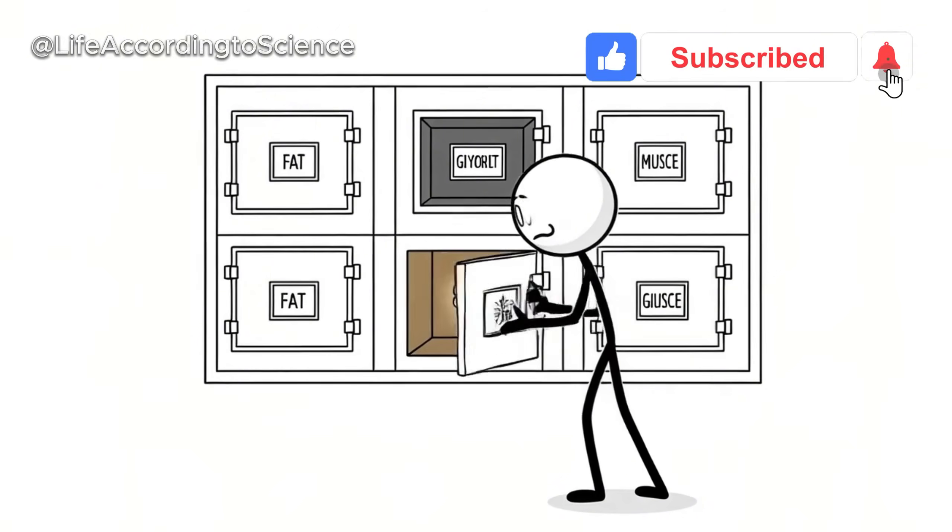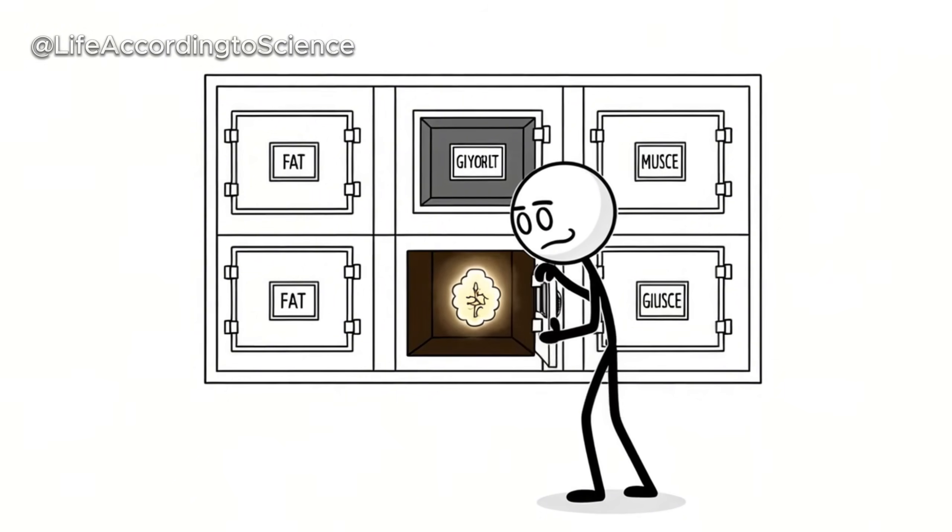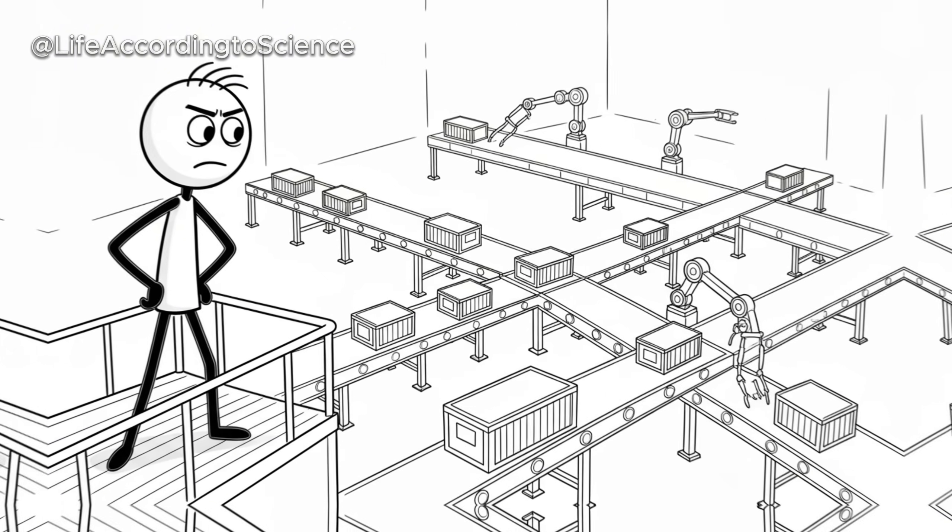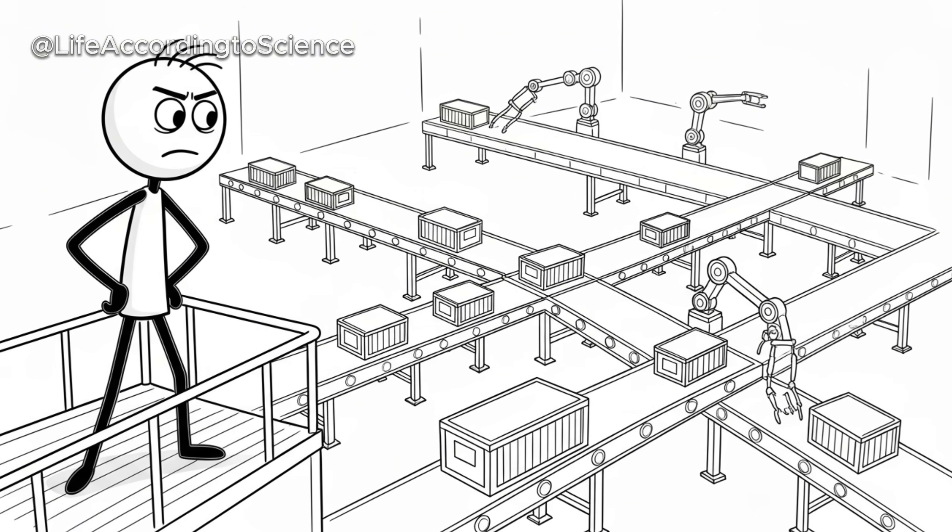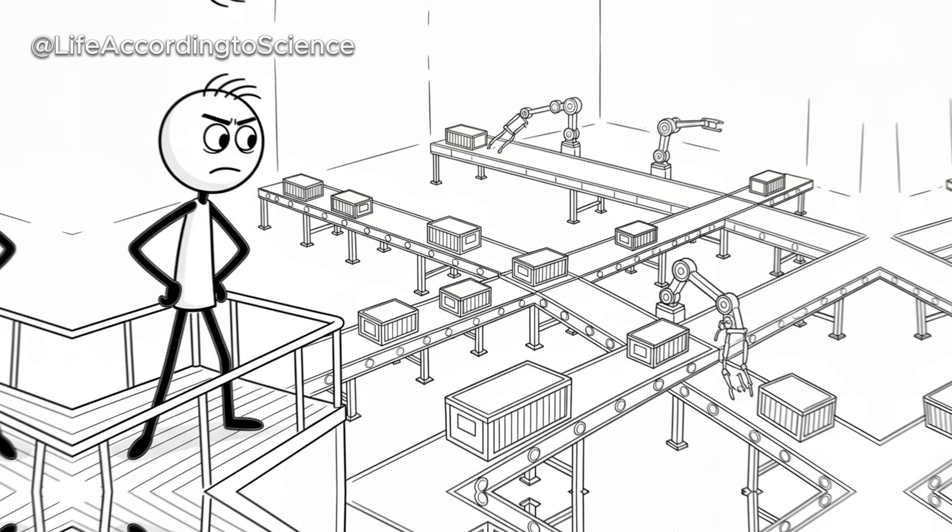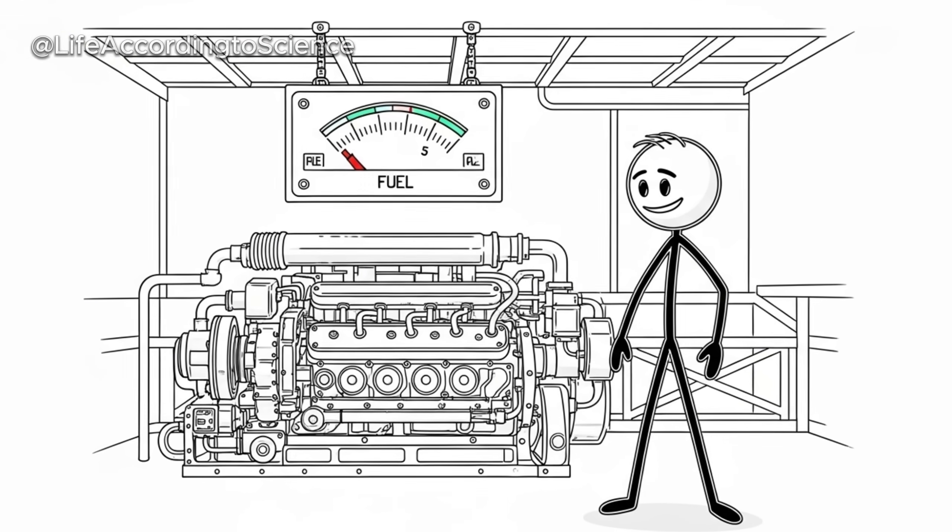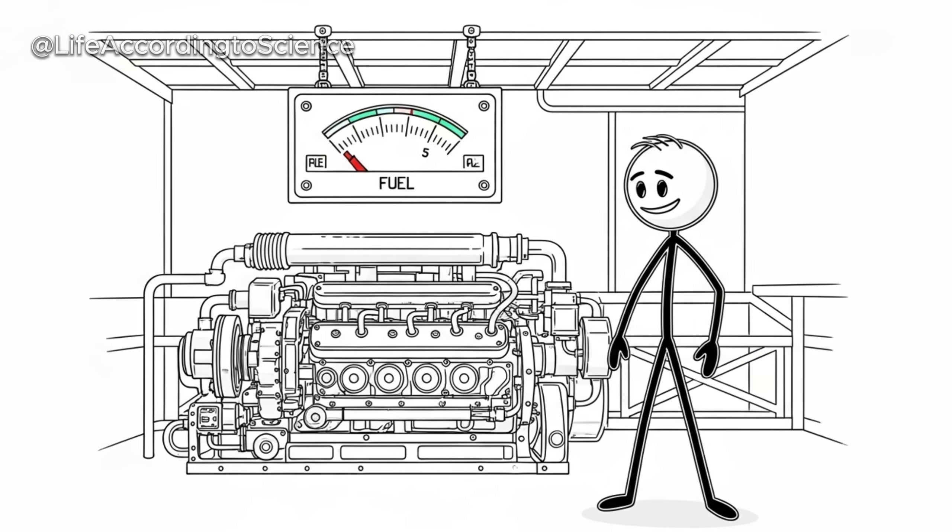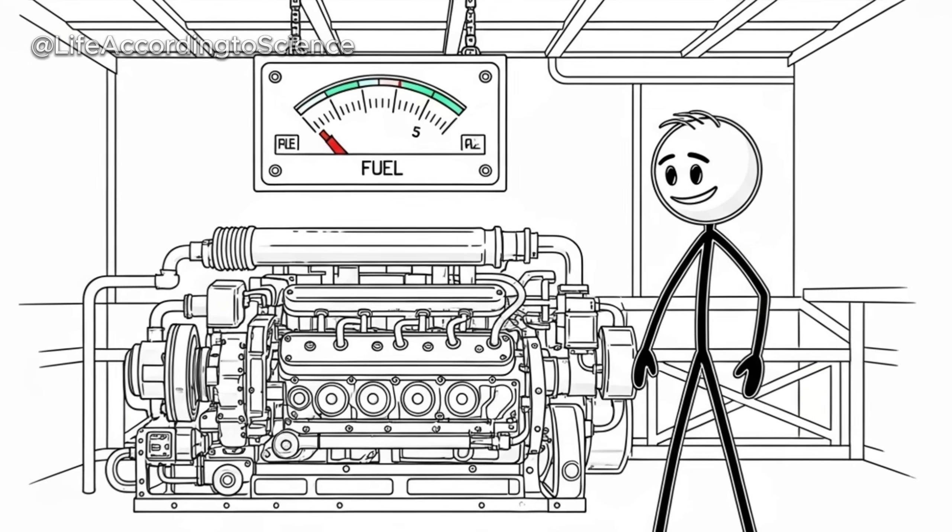But as the hours pass, the liver's glucose reserve, called glycogen, starts to deplete. This is when your body begins scanning for new sources of energy. Fat, muscles, even tiny stores inside your cells become potential backup fuel. The fascinating part is that your metabolism hasn't slowed down yet. In fact, for a short time, it might increase slightly to mobilize stored energy.